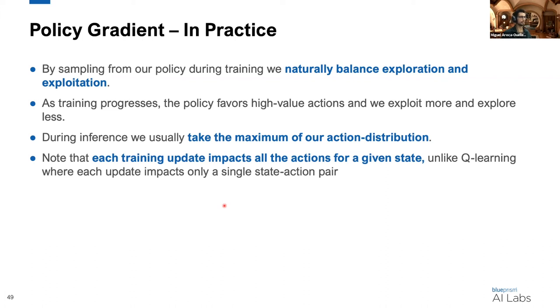One more thing to note is that in policy gradient training, each update actually impacts all the actions for the given state because it's a distribution. This is different than in Q-learning, where our updates are focused on a single state-action pair. In tabular Q-learning, we're updating a single entry in the table. But when we deal with policy gradient, we're actually updating all the actions for a given state every time we update. Although we're forced to be on-policy in policy gradient, these updates can be seen as more powerful because you're providing more information at each update.